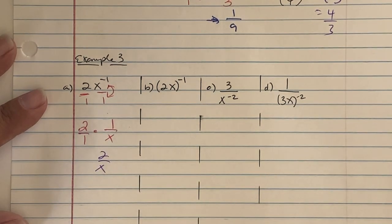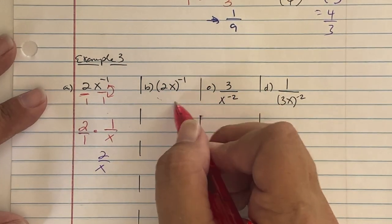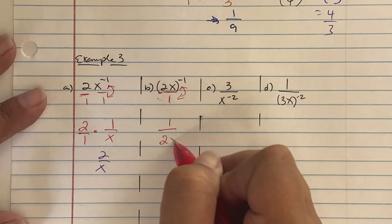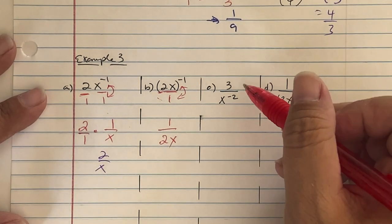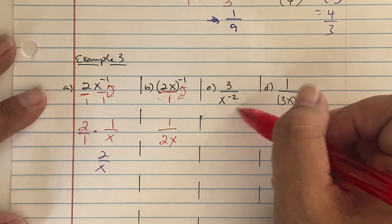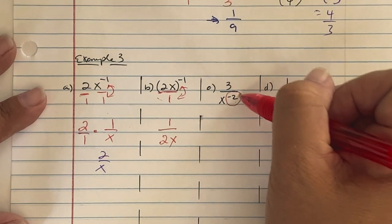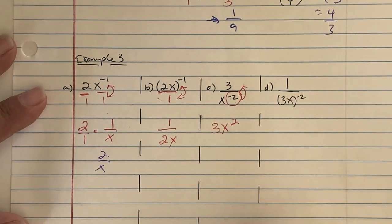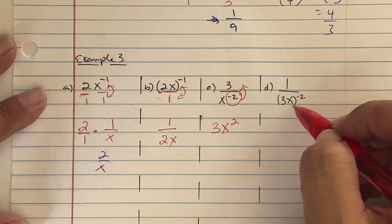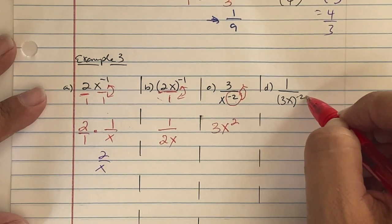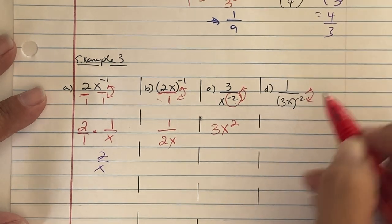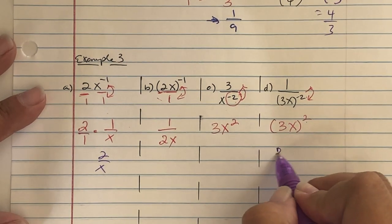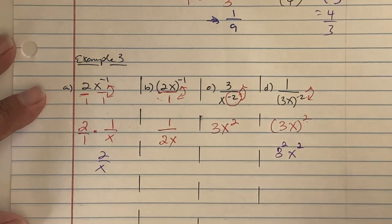In 3b, the parentheses contain 2x raised to the negative 1, so we flip the entire thing to get 1 over 2x. In 3c: 3 over x to the negative 2 — the x in the denominator with a negative exponent slides up to the numerator, giving 3x squared. In 3d, the entire parentheses (3 over x) is raised to the negative 2, so we swap positions to get (3x) to the power of 2, then apply: 3 squared is 9, giving 9x squared.